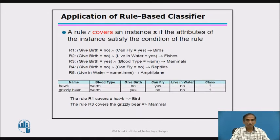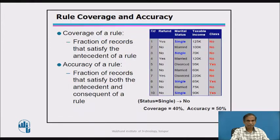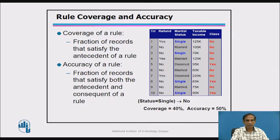Rule-based classifiers are used for classifying data into various forms. Two key terms are rule coverage and accuracy. Coverage is the fraction of records that satisfy the antecedent, whereas accuracy is the fraction that satisfies both the antecedent and the consequent of a rule.